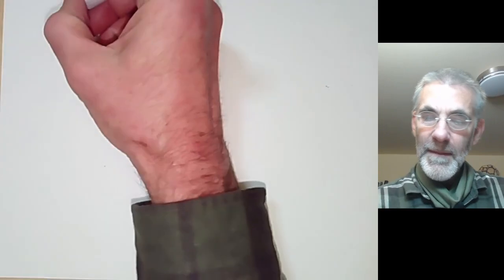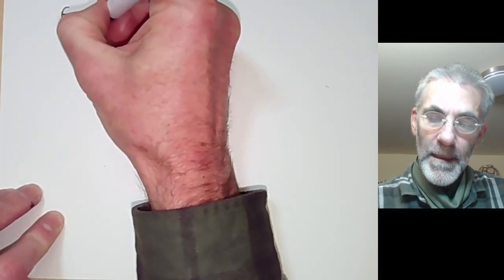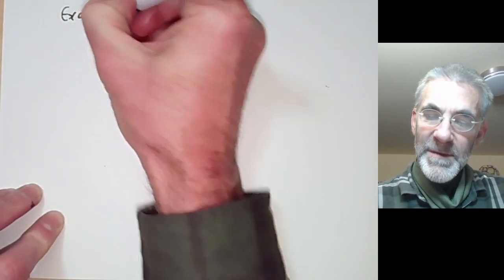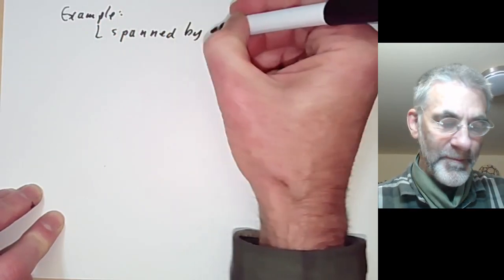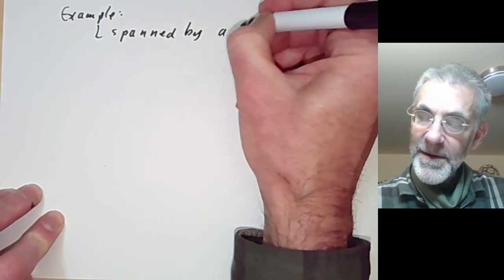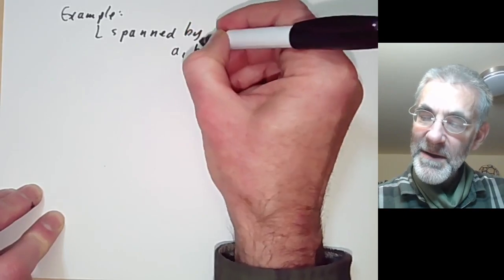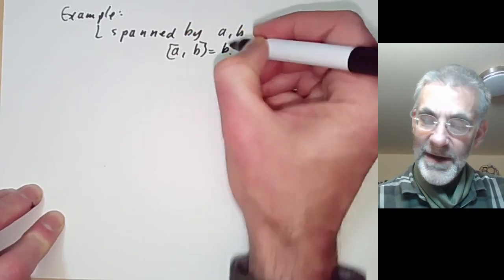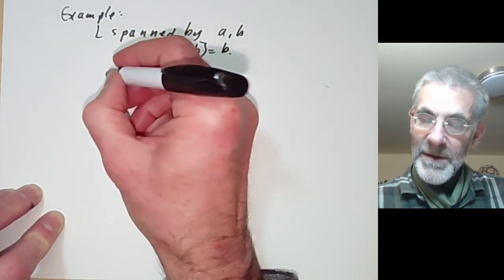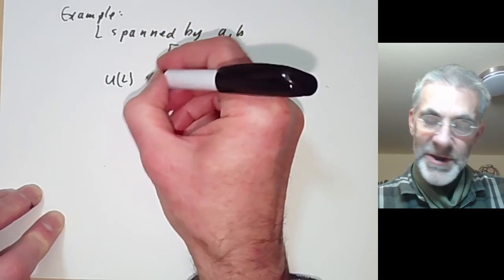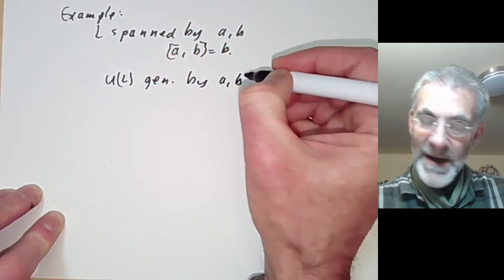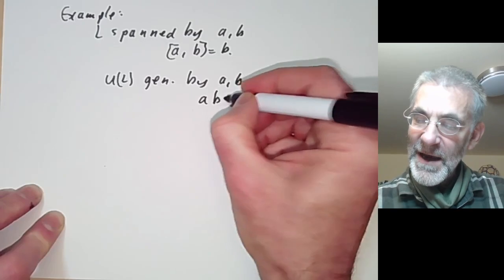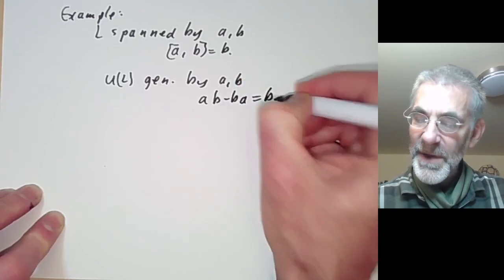Another example: suppose L is spanned by A and B with the relation [A,B] = B. Then the universal enveloping algebra is generated by elements A and B subject to the relation AB minus BA equals B.